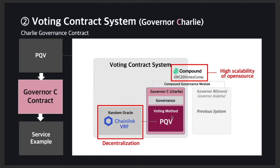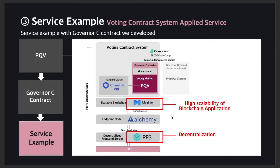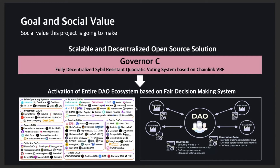To make this open-source solution more scalable, this contract follows the Compound Governance Module Standard, which is one of the most widely used standards in the DAO ecosystem. Current DAOs using the Compound Module based on Governor B can easily apply our new solution, Governor C, which is developed under the same standard. Finally, we showed our demo, which applied the Governor C contract on governance. By providing a scalable and decentralized open-source solution, we want to activate the entire DAO ecosystem based on a fair decision-making system.